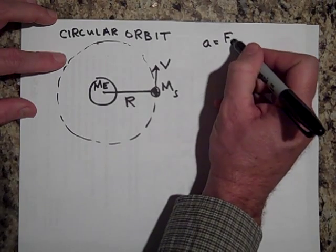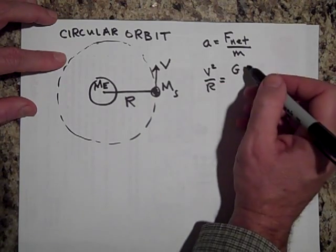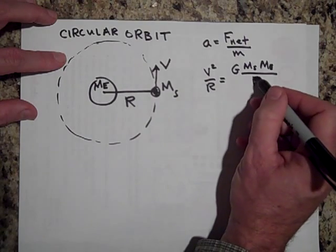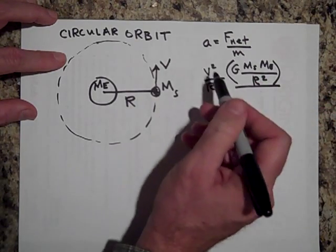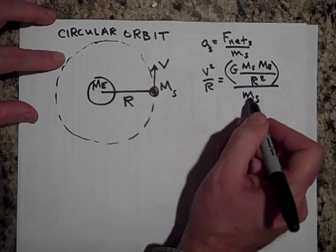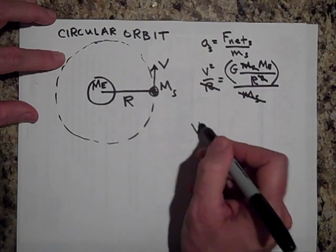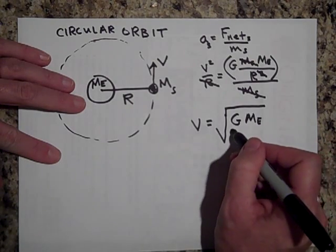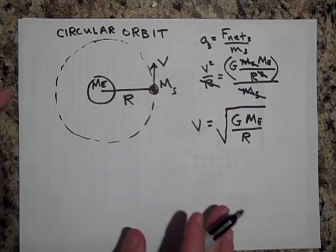Since it's going in a circle: a = F_net / m, so V² / R equals G times the mass of the satellite times the mass of the Earth all over R squared. Dividing both sides by the mass of the satellite, those cancel, and so V equals the square root of G times the mass of the Earth all over R — how far out you are.